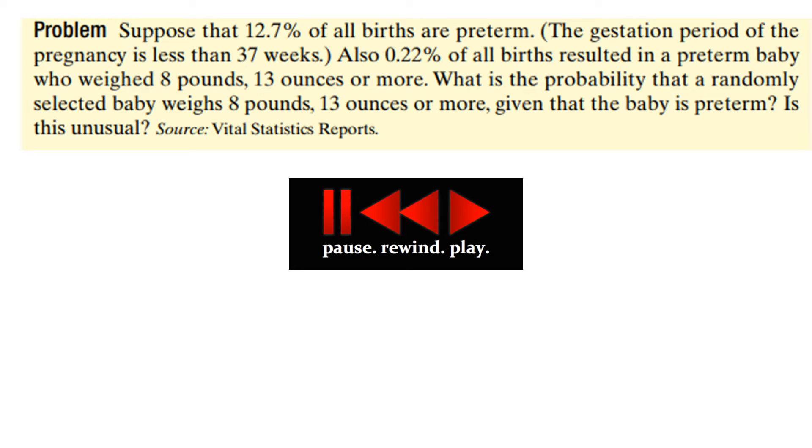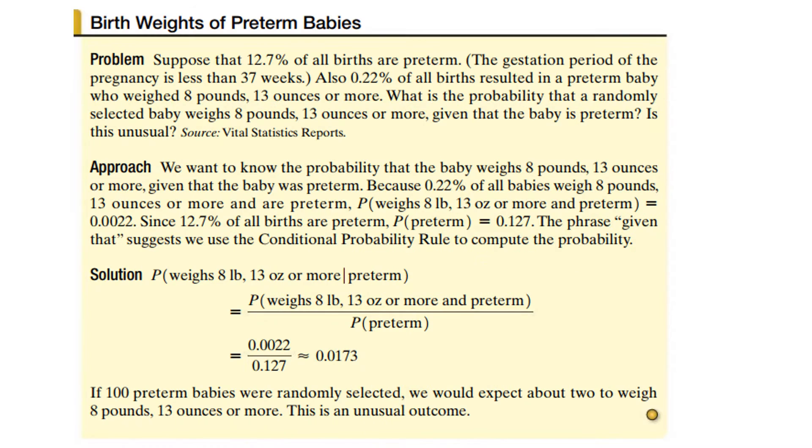When we closed last time, I left you doing this problem. If you did it, congratulations. If not, you have another opportunity to do it. Let's see how you did. So what we were supposed to do was calculate the probability that a baby weighs 8 pounds, 13 ounces or more, given that they are preterm. By our definition, we put the probability of preterm in the denominator and in the numerator, we take the probability that the baby weighs 8 pounds, 13 ounces or more and is preterm. And so from the information given in the problem, that's a ratio of 0.0022 divided by 0.127.